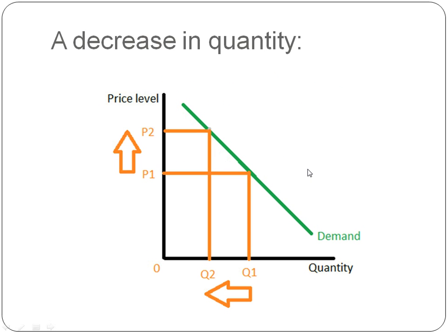I'm going to use an example of shoes — Converse's. Originally the price of Converse's is around £50. If there was an increase, say they increased it to £100, prices are increasing from P1 to P2, from £50 to £100. It means people are demanding less because it's £100 now. Some people might still buy it at £100 — that's why Q2 isn't all the way at zero — because some people are really in love with it and can't live without it.